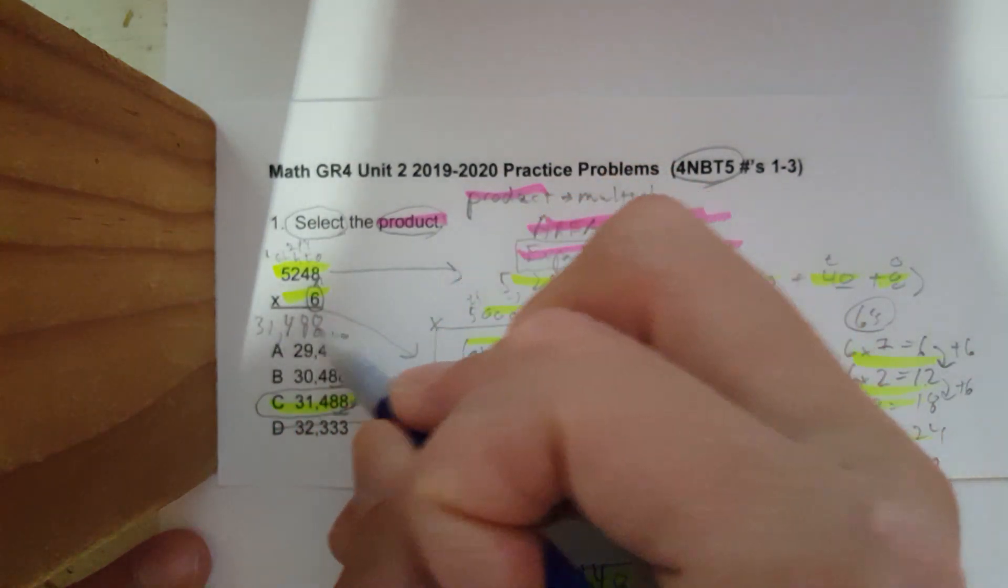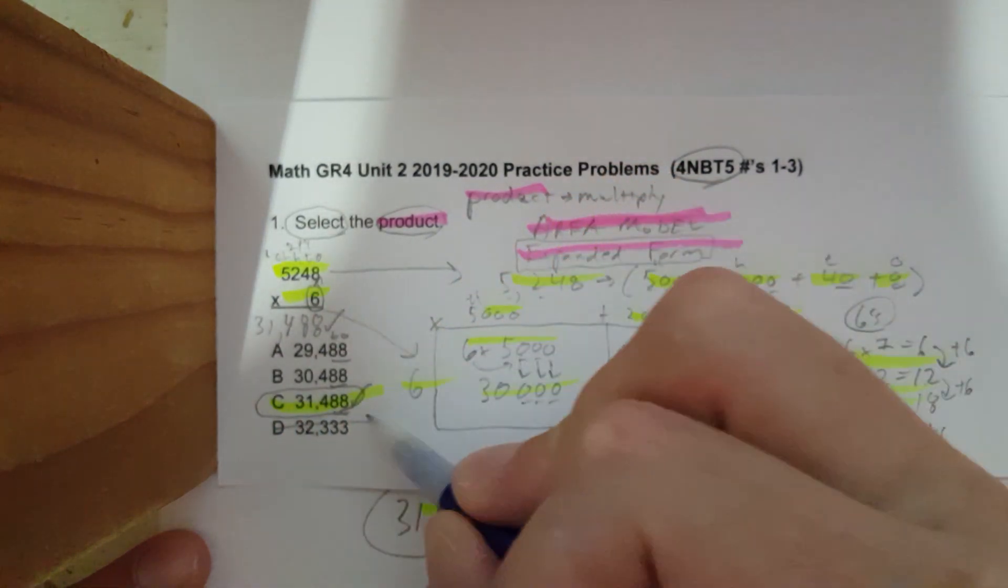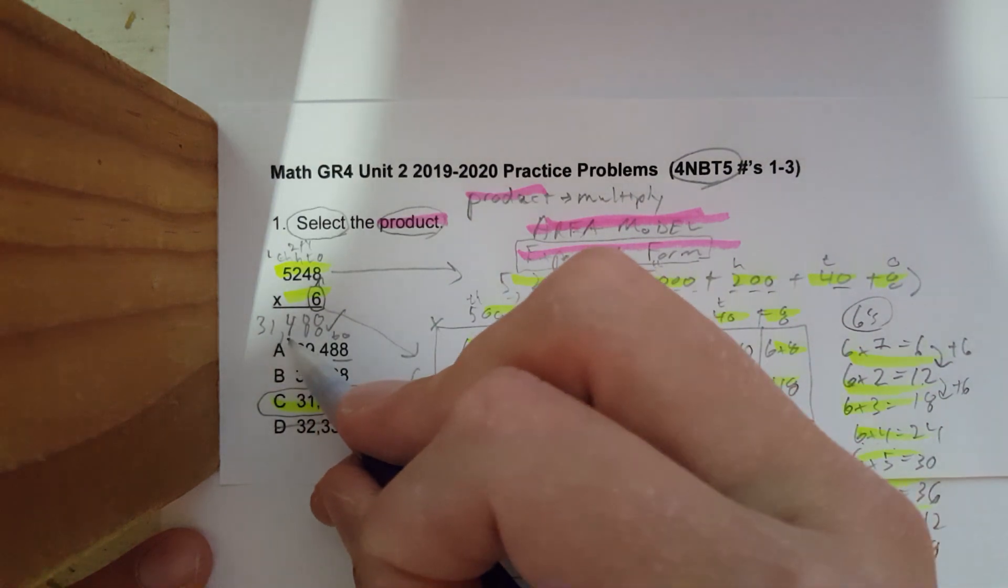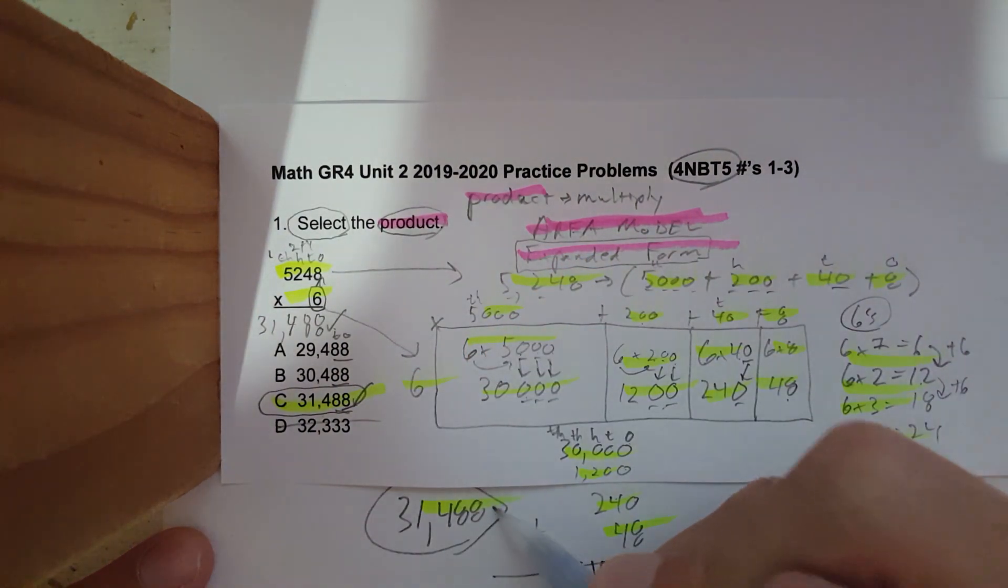Six times five is 30, plus one: thirty-one thousand four eighty-eight. Thirty-one, one thousand four hundred eighty-eight. Check, check, check, check.